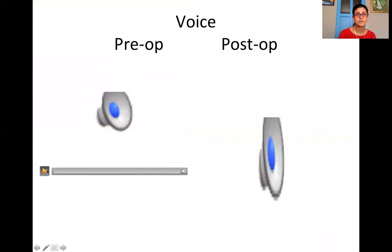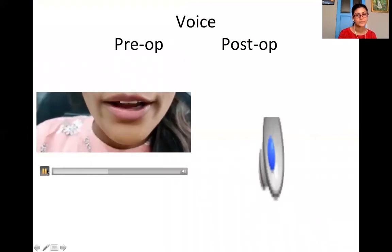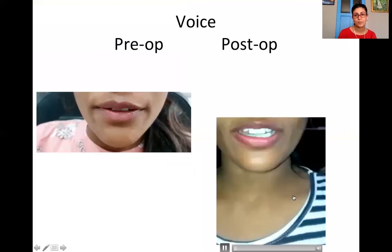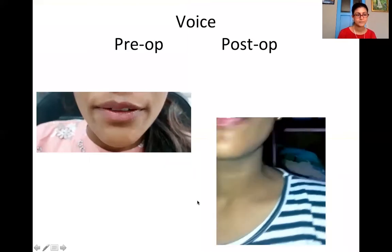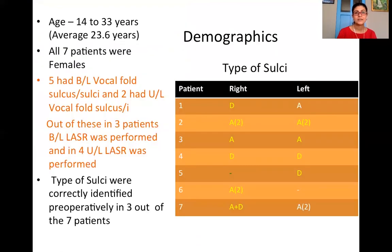This is the pre-op voice of the patient counting from two to seven, followed by the post-op voice counting from two to eight — demonstrating an improvement in maximum phonation time. Regarding demographics, all seven patients were female, and only three of the sulci had been identified on stroboscopy pre-operatively; the rest were identified under general anesthesia. The sulci highlighted in yellow were those which were operated upon.